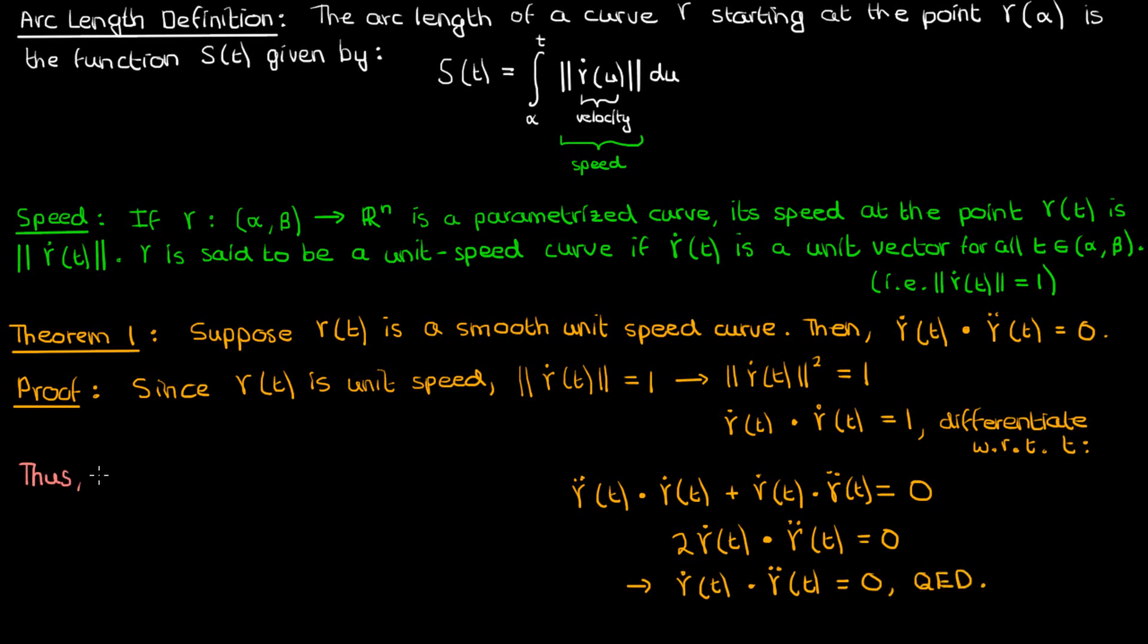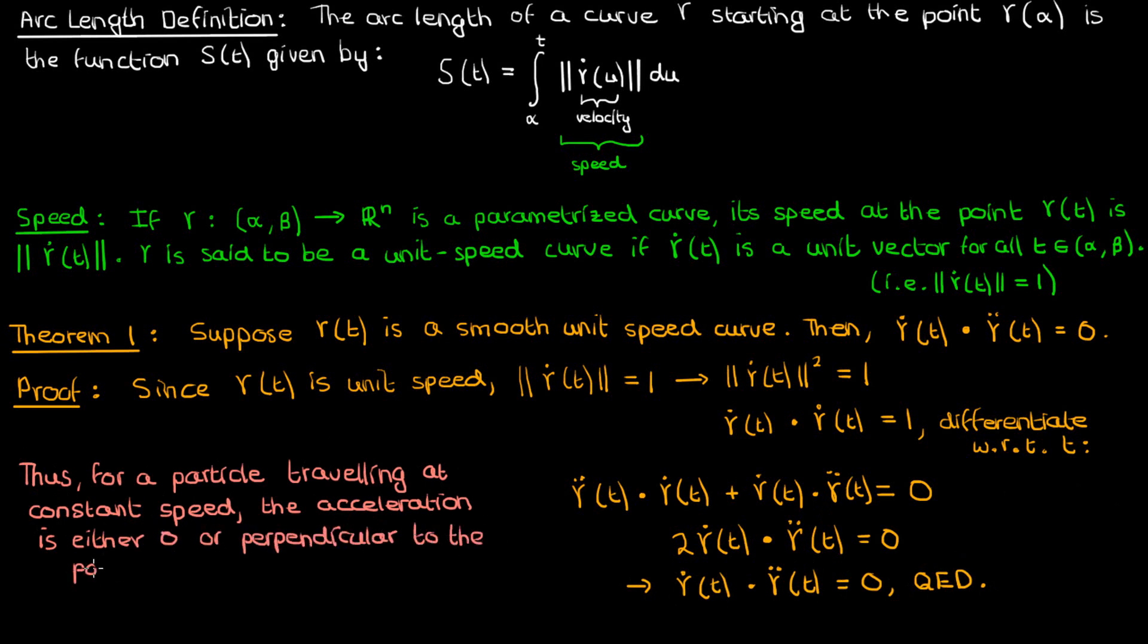The implication of this theorem is that if I have a particle traveling at a constant speed, like a speed of 1, for instance, the acceleration of that particle is either equal to 0, or it's perpendicular to the velocity of that particle, which is what happens in rotational motion. In rotational motion, the speed of the particle stays constant, but it's still accelerating because its direction is changing and the acceleration is normal to the direction of travel.